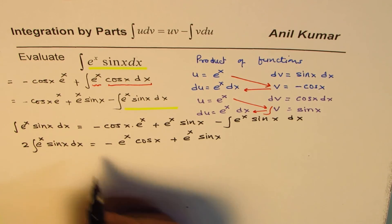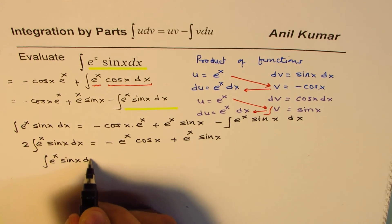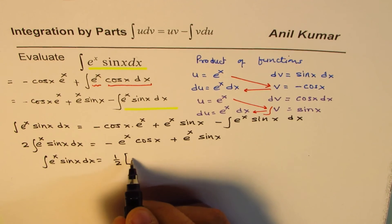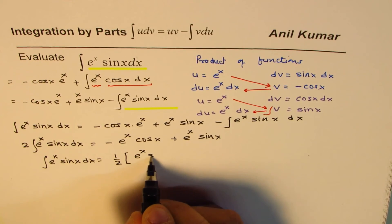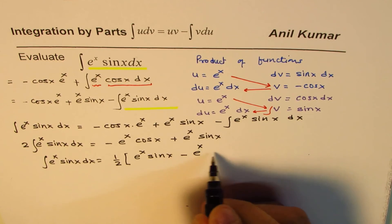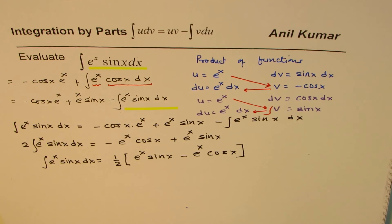So what is the integral of the function? The integral of e to the power of x sin x dx can now be written as half of e to the power of x sin x minus e to the power of x cos x. So that is the result.